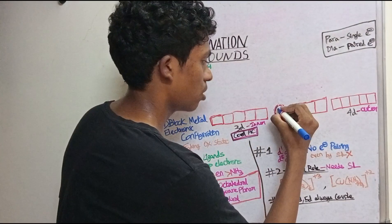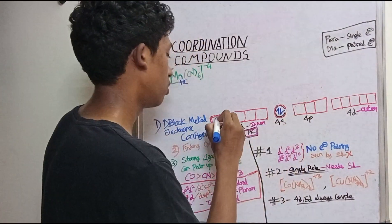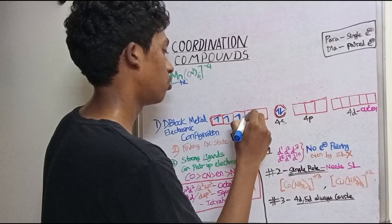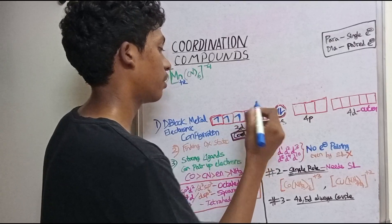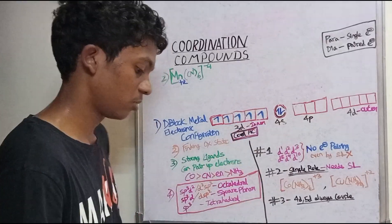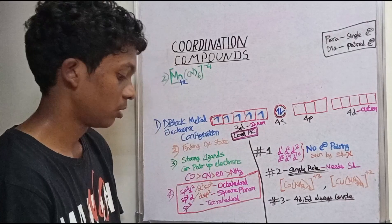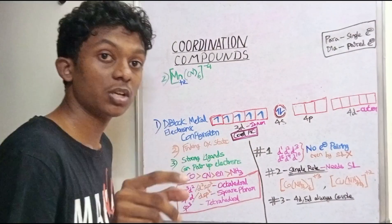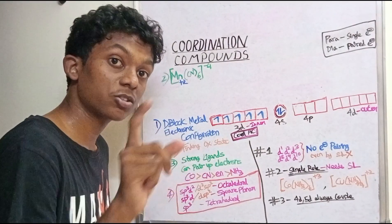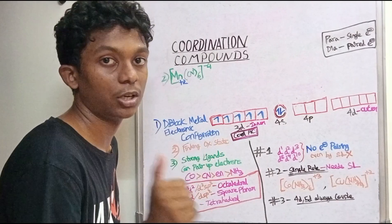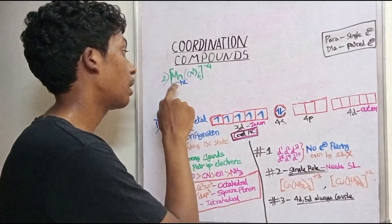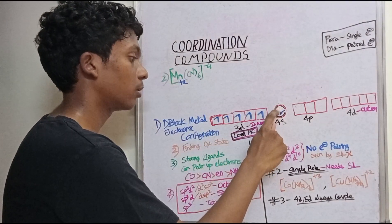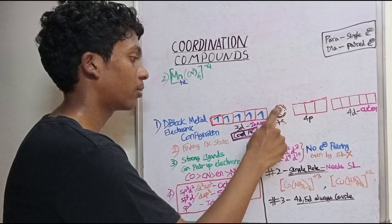The S orbital is full, and D5 has 1, 2, 3, 4, 5 electrons. But for the oxidation state of plus 2, that means 2 electrons are removed, giving us 2 fewer electrons.